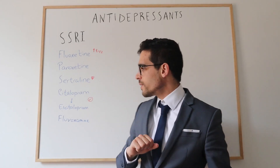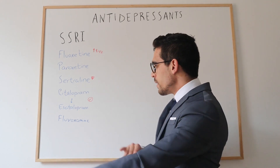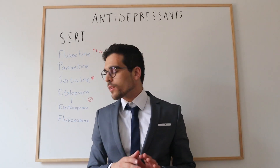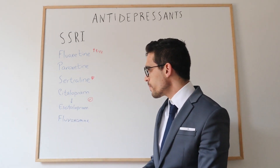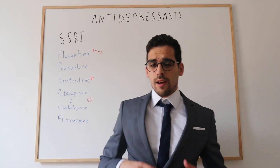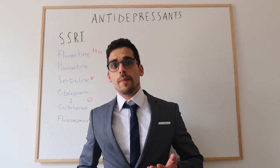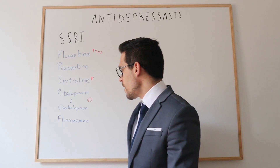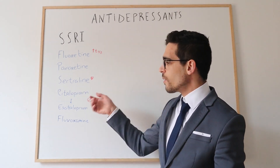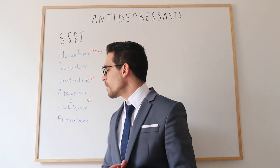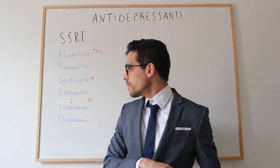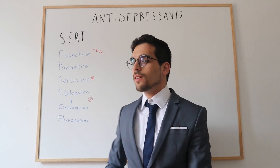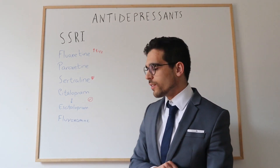Citalopram and escitalopram — basically escitalopram is just an enantiomer of citalopram. These are considered by many psychiatrists to be the first-line agents because they are the best tolerated. Especially escitalopram, which is the cleanest one in terms of drug interactions.